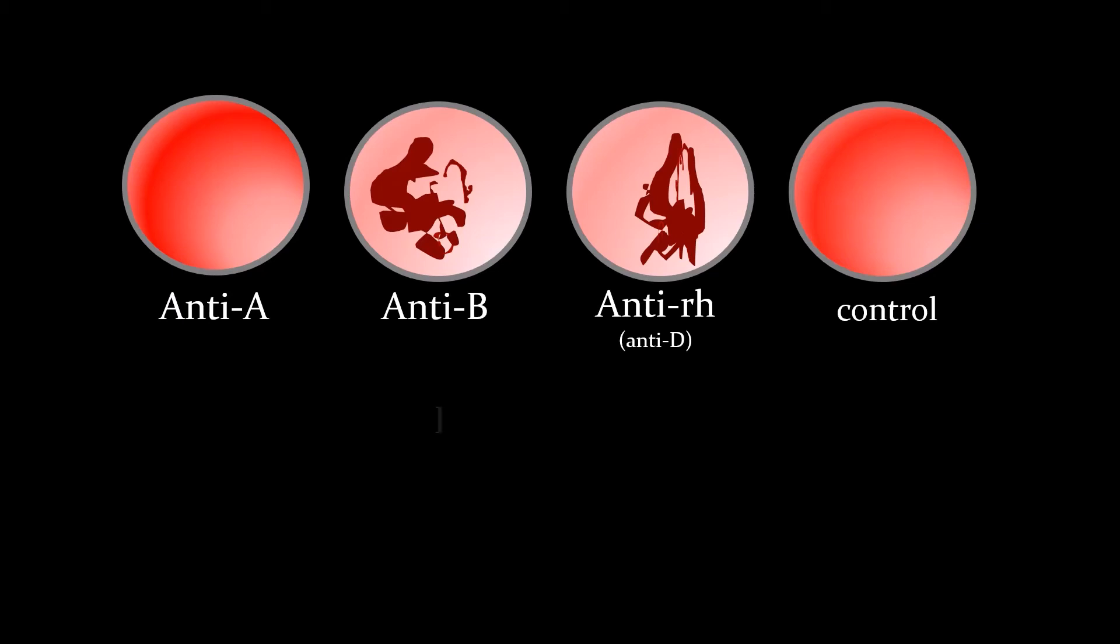We're seeing clumping under B, which means they have the B antigen. They're clumping at RH, which means they have the RH antigen. So the blood type would be B positive.